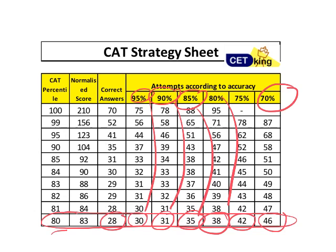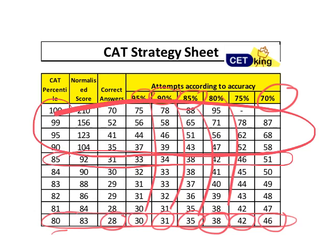Similarly, for 85, 90, and 99 percentile, you can pause the video and check the details — what percentage of attempts are required according to whatever accuracy level you have.